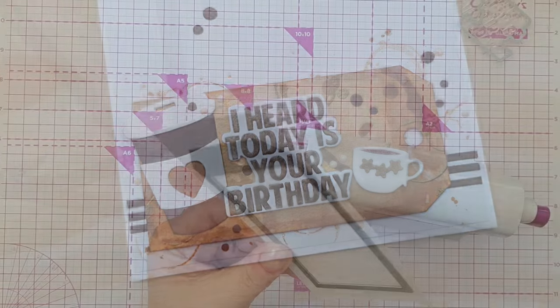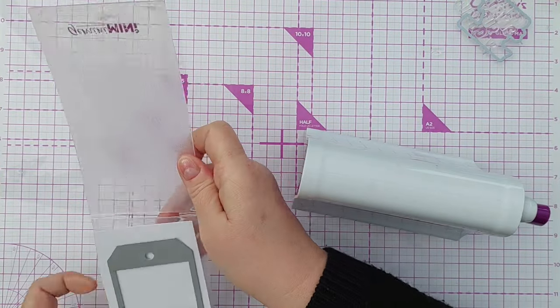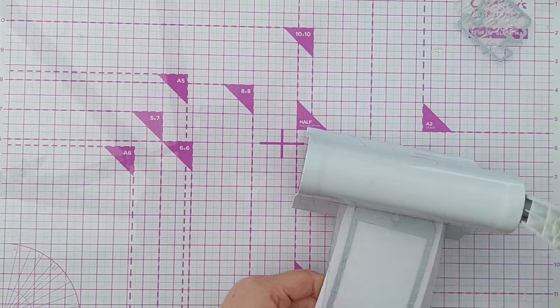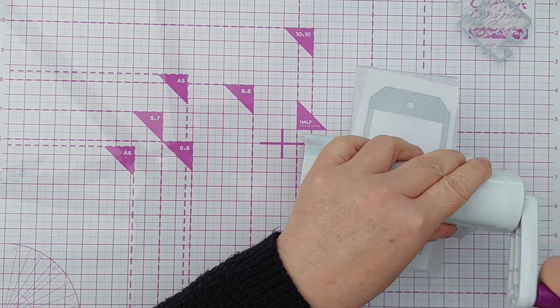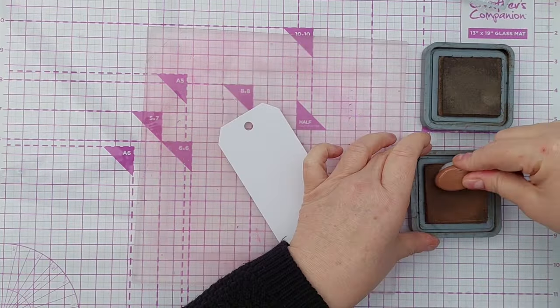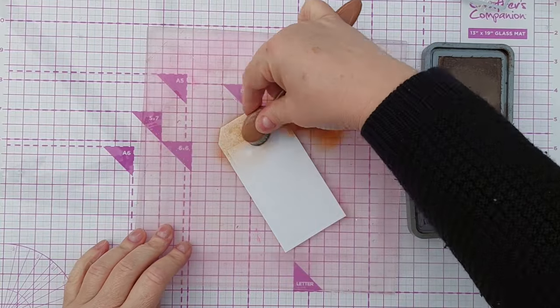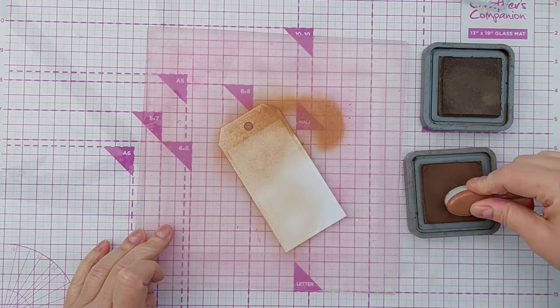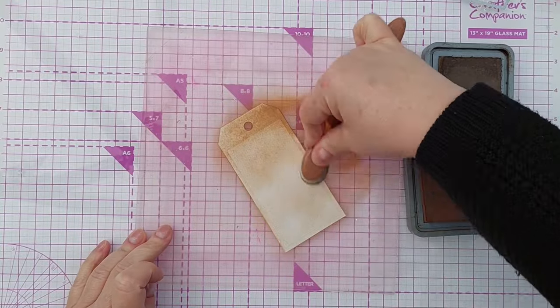So the first thing I did was take some mixed media paper and cut a tag from it and this is going to form the base of the focal point of my card. I popped the tag on my grip mat to keep it still and I used my two brown distress oxides on it.